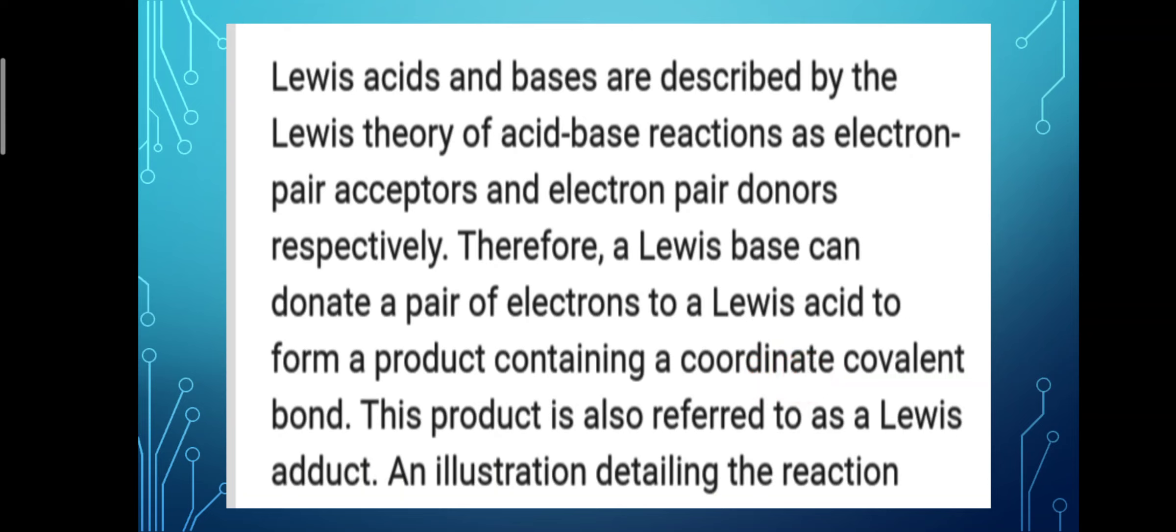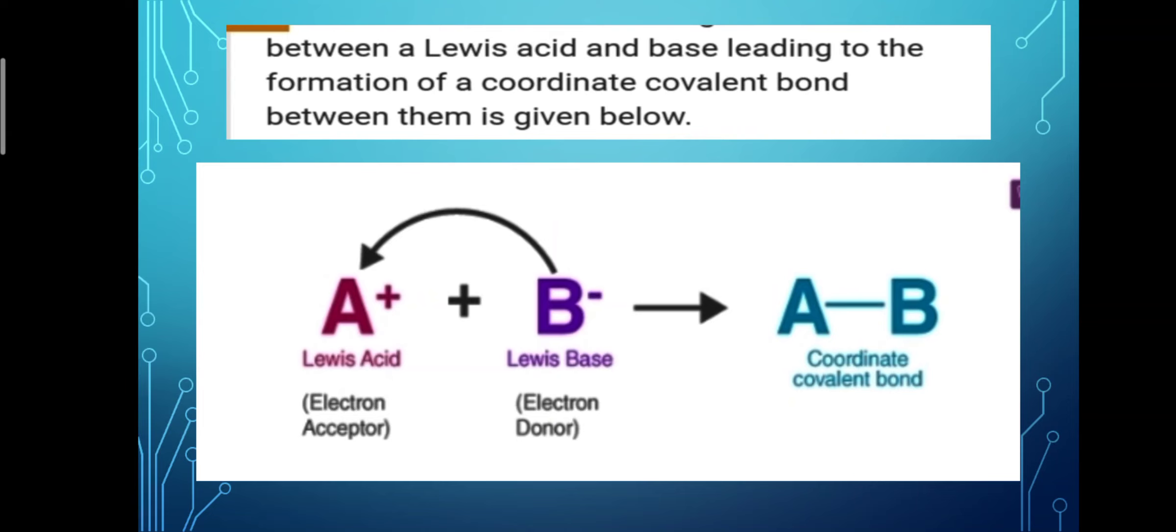This product is also referred to as a Lewis adduct. An illustration dealing with the reaction between a Lewis acid and base leading to the formation of a coordinate covalent bond between them is given below. Lewis acid electron acceptor plus Lewis base electron donor forms a coordinate covalent bond, called Lewis adduct.